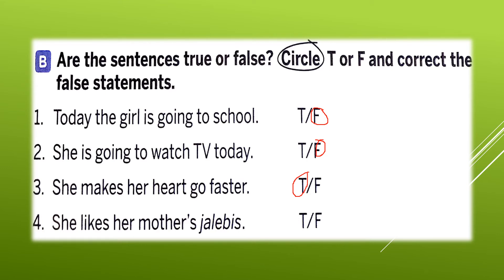Done children, understood? Let's review. Number one: Today the girl is going to school — false, because it is a holiday. Number two: She is going to watch TV today — false, because there is no electricity. Number three: She makes her heart go faster — true. Number four: She likes her mother's television — true.